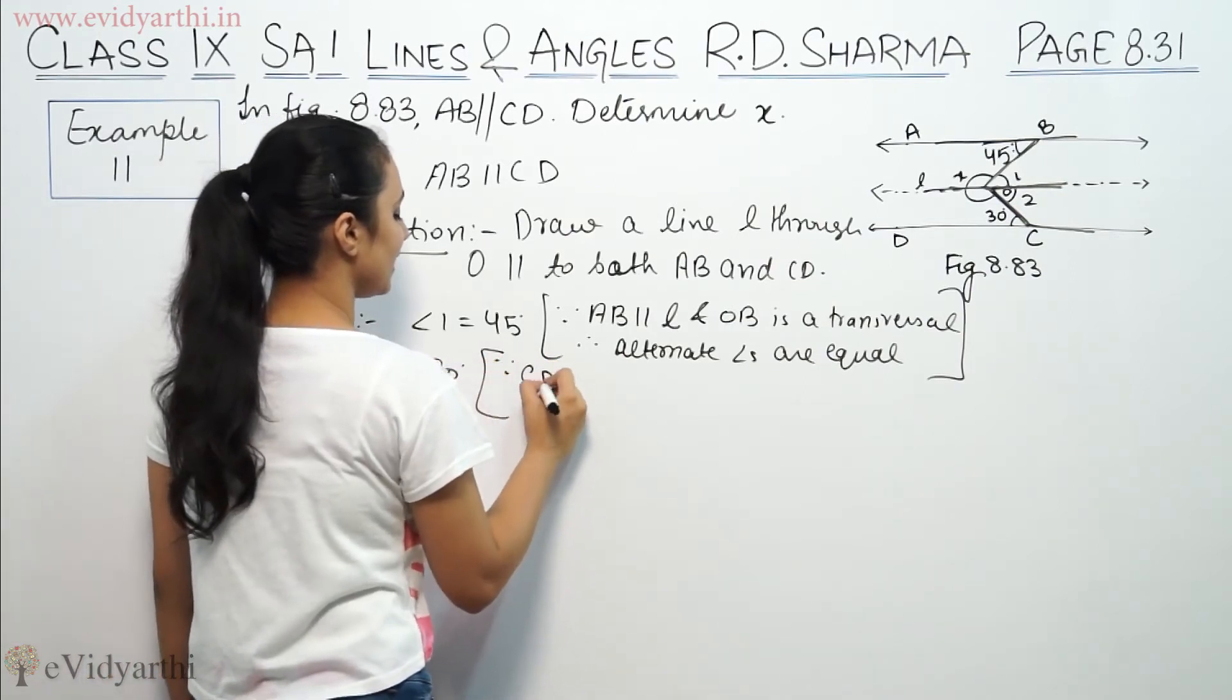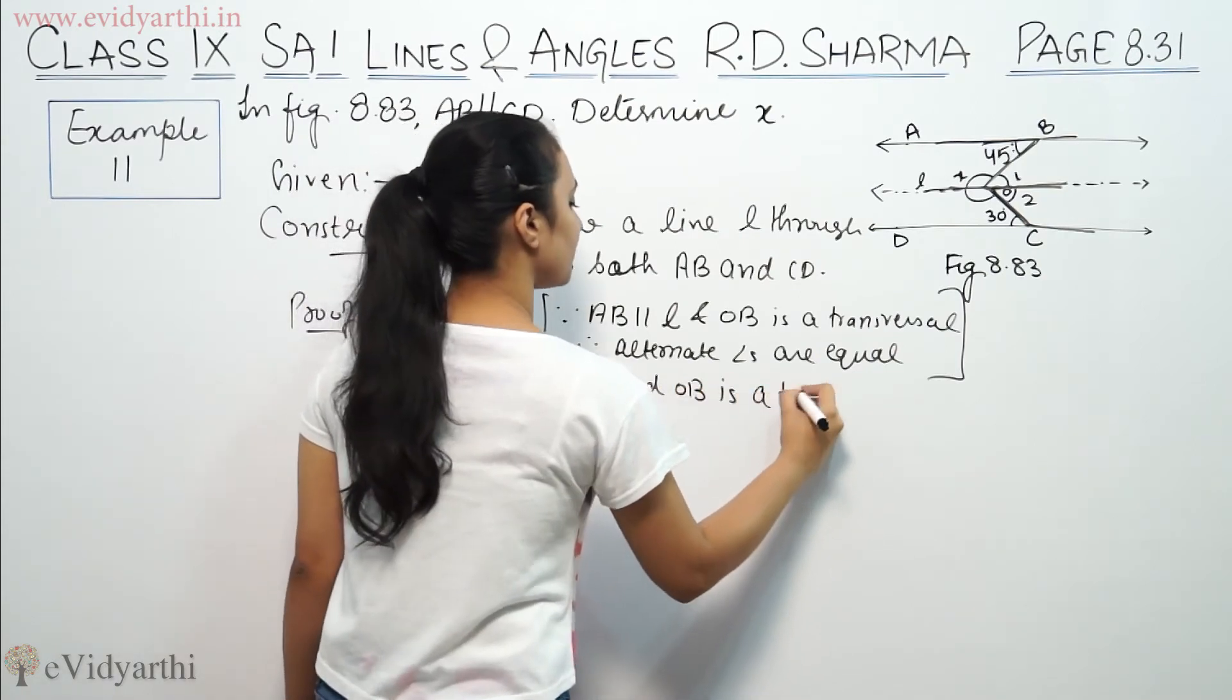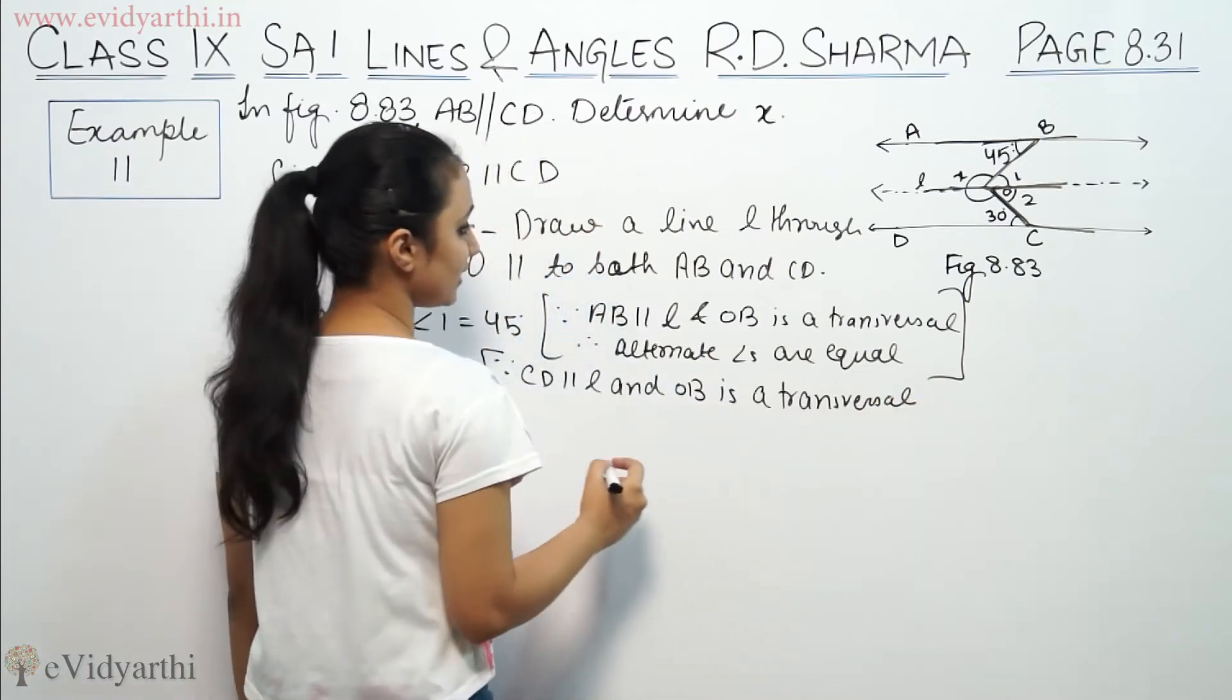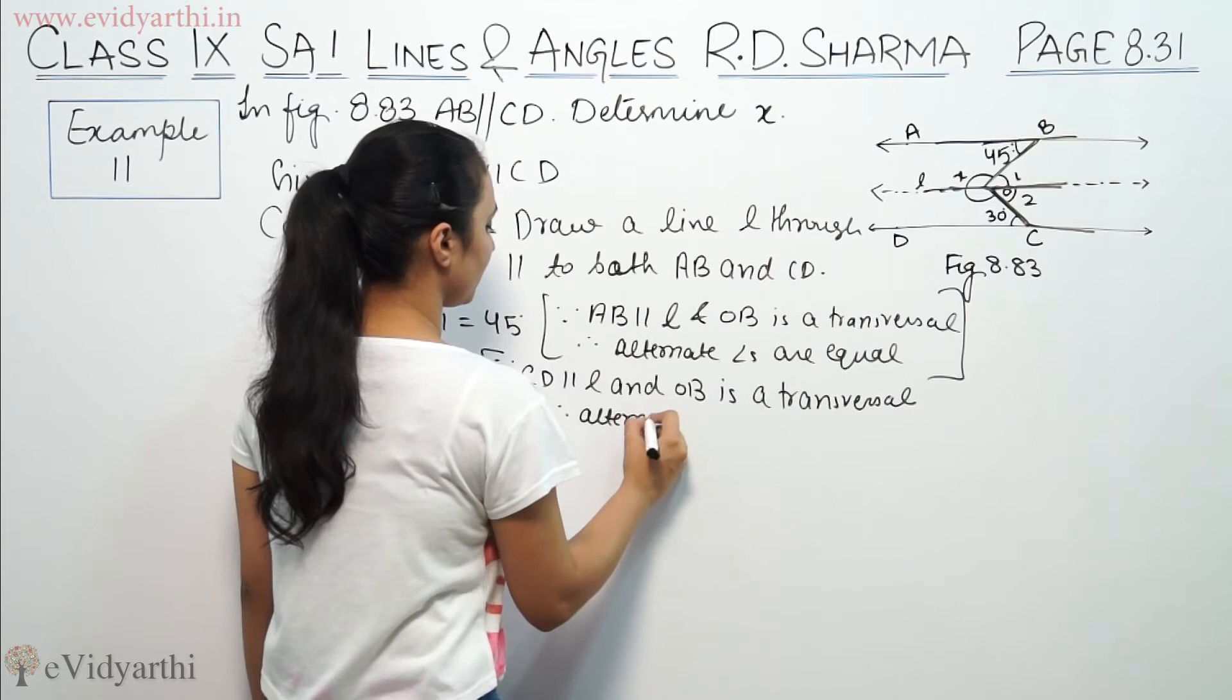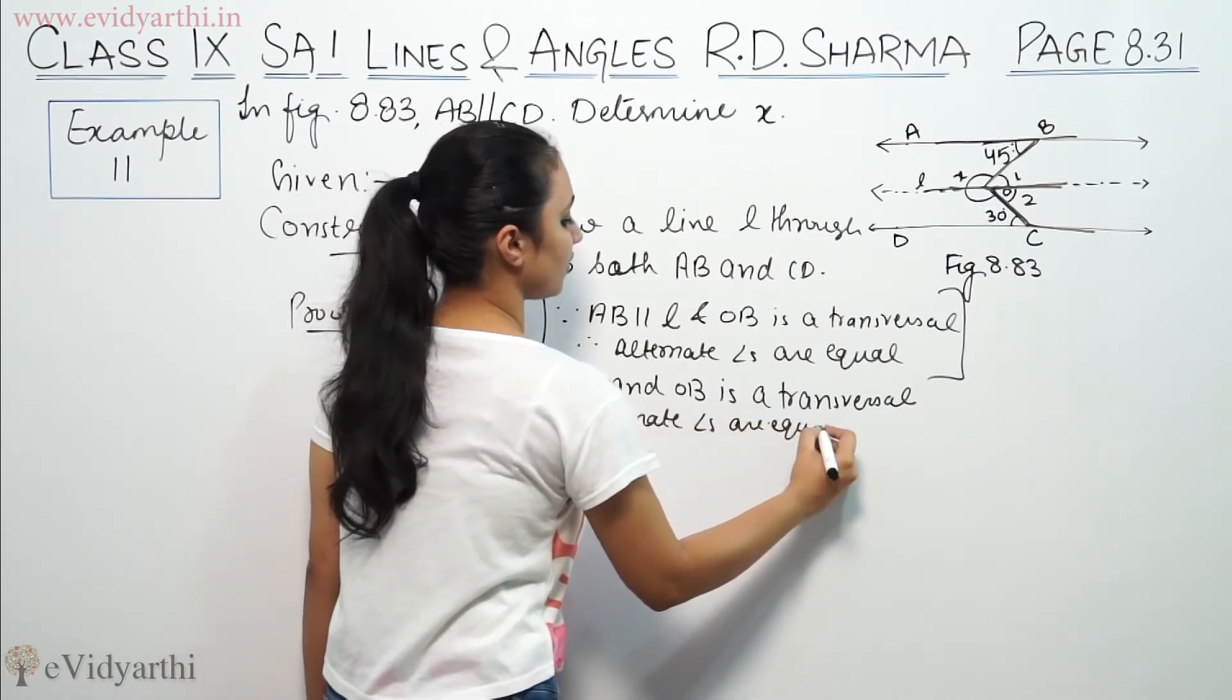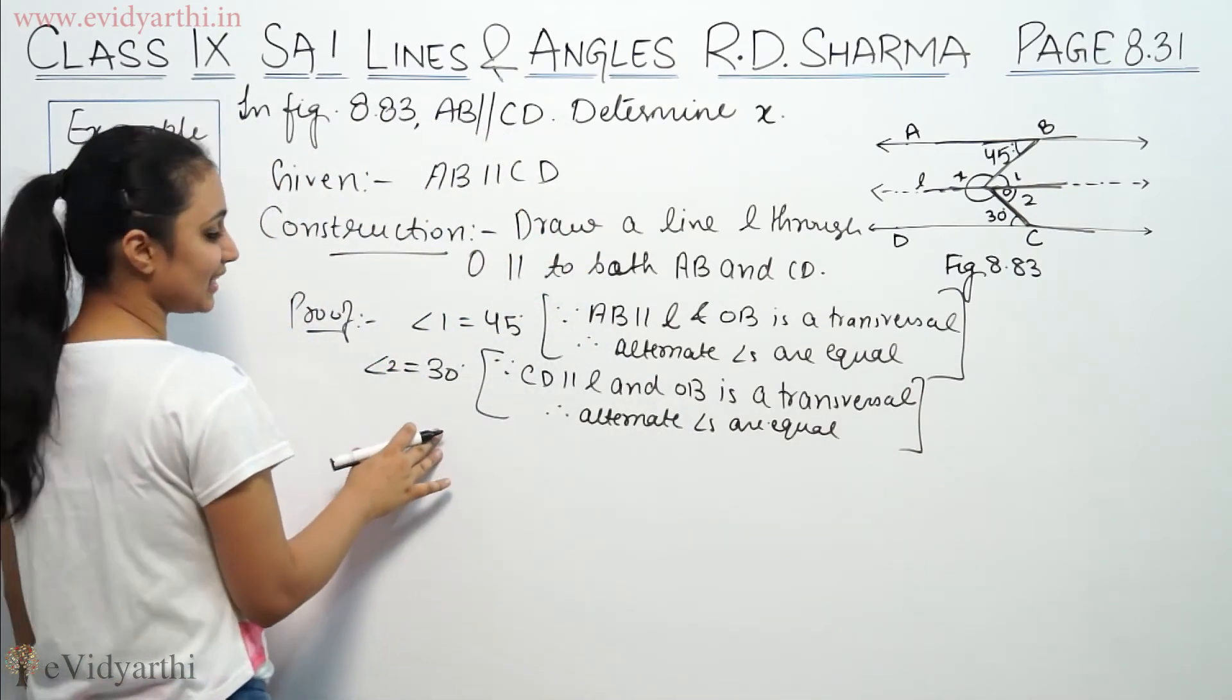Since CD is parallel to L, and OB is a transversal, therefore alternate angles are equal. So angle 2 is 30 degrees.